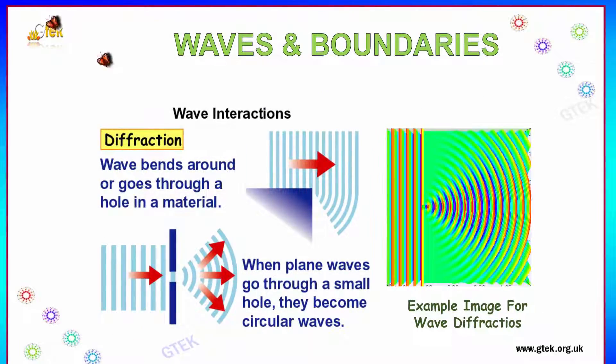Diffraction is also one such example for wave interaction. In diffraction, the wave bends around or it goes through a hole in a material. You can see here very clearly. This is the wave. When it goes around through a hole, you can see how it is getting to be reacted through this hole.